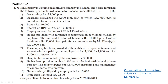Number seven: The company has provided the facility of sweeper, watchman, and servant, who are paid by the employer Rs. 1,500, Rs. 1,800, and Rs. 1,500 per month respectively. Number eight: Hospital bill reimbursed by the employer is Rs. 35,000.